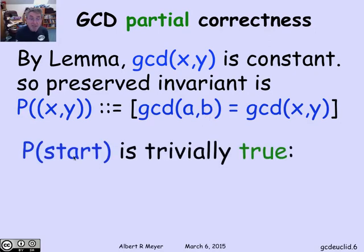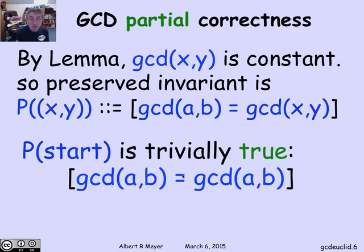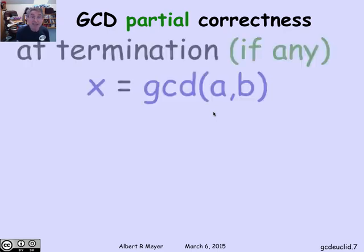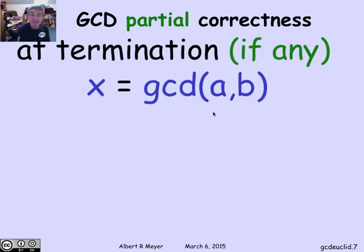Moreover, P of start is trivially true because at the start, x and y are a equals b. So I've got that this property is true at the start and it's preserved by the transitions. So the invariance principle tells me that if the program stops, I'm going to have the GCD of x and y when it terminates is equal to the actual GCD that I want.